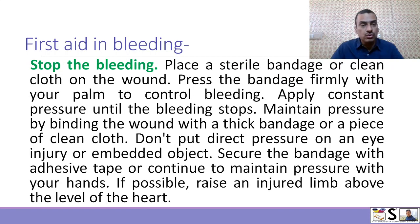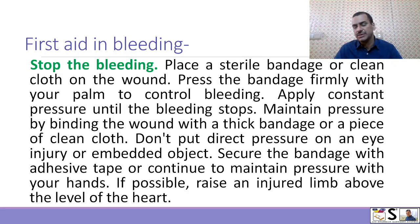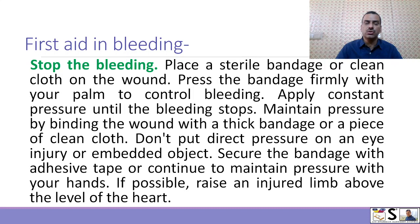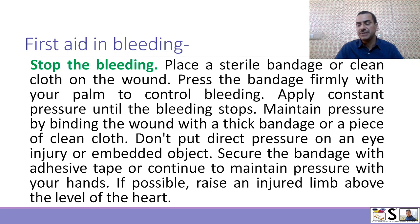Second, stop the bleeding. Place a sterile bandage or clean cloth on the wound. Press the bandage firmly with your palm to control bleeding. Apply constant pressure until the bleeding stops. Maintain pressure by binding the wound with a thick bandage or piece of clean cloth. Don't apply direct pressure on eyes, an injury with a sharp object still embedded. Secure the bandage with adhesive tape or continue to maintain pressure with your hands.